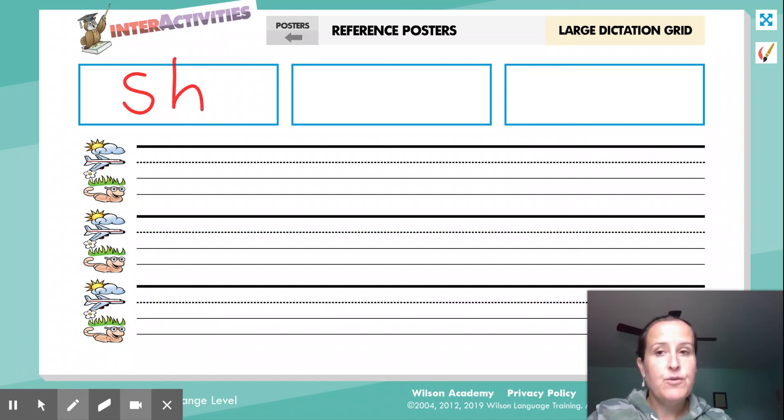Now, if you want to write on your whiteboard, that's fine too. Just take a picture of your whiteboard when you're done. You can pause the video at any time, okay? All right, echo after me, and in the second box, right here, write the letters that spell k.